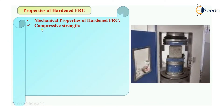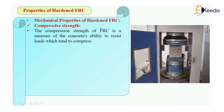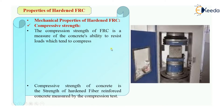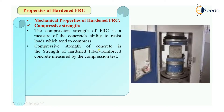Let's see what compressive strength is and how we can define it for hardened FRC. The compressive strength of FRC is a measure of its ability to resist compressive loads which tend to compress it. This strength of hardened fiber-reinforced concrete is measured by a compression test. In the picture you can see a UTM or CTM — a compressive testing machine — which is generally used for determining the compressive strength of a concrete cube.